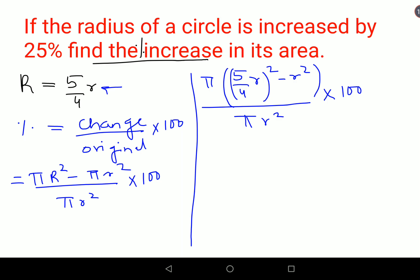Now what happens is the pi's are cancelling and I am left with 5 upon 4 r square the whole square basically. So we get 25 upon 16 r square minus r square upon r square into 100.